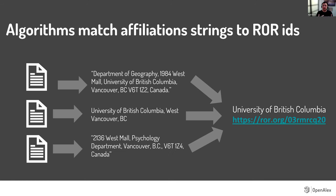We extract affiliation strings and we're trying to match them to an institution. These come in all shapes and sizes. There are some challenges — for instance, one example I picked has the wrong city for the university. Maybe the faculty member lived there and put that, but things like that happen and we have to try and match it to a ROR ID. The challenge is that sometimes metadata is wrong. No algorithm is perfect, but people can help curate.